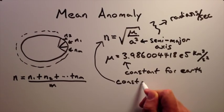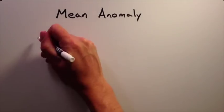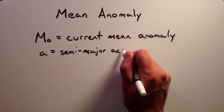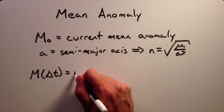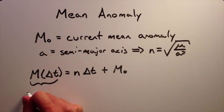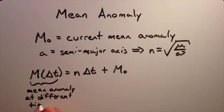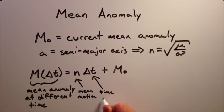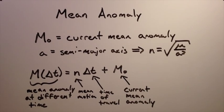The really great part about the mean motion is that it is constant. If you know your current mean anomaly and your mean motion, you can calculate your mean anomaly at any other time by multiplying the amount of time you want to travel by the mean motion and adding it to your current mean anomaly. Simple, right?